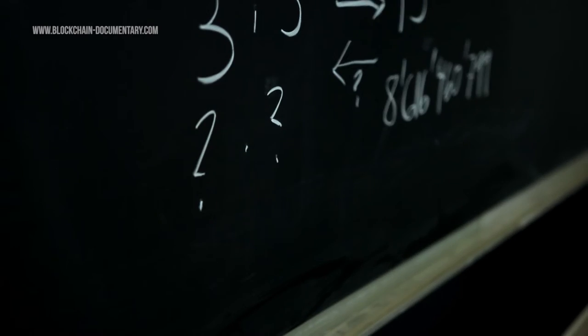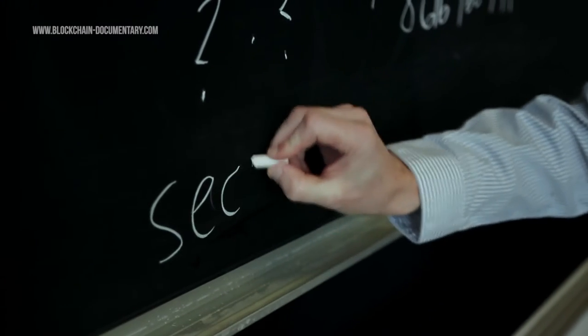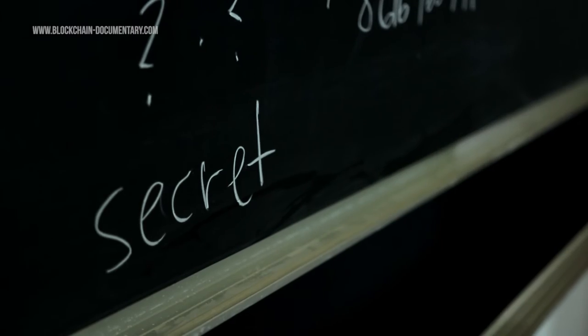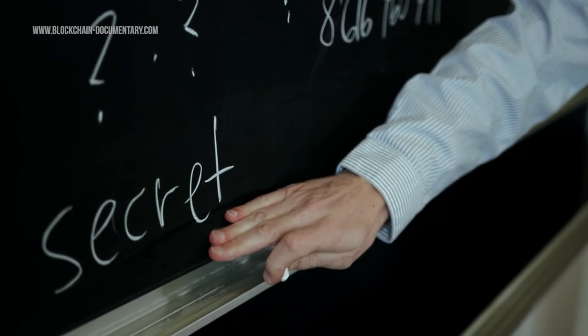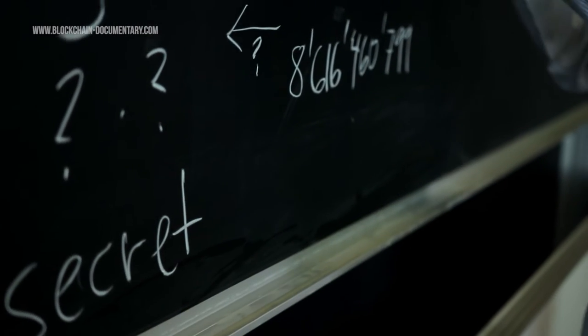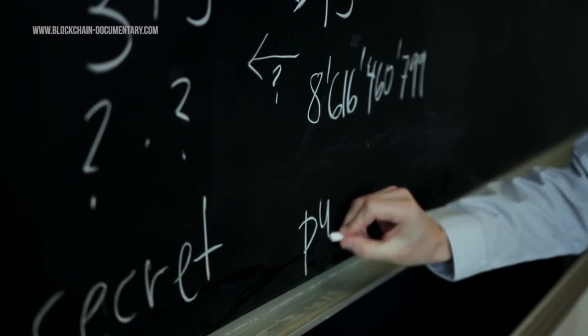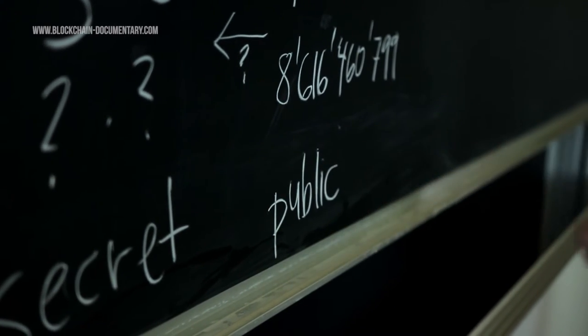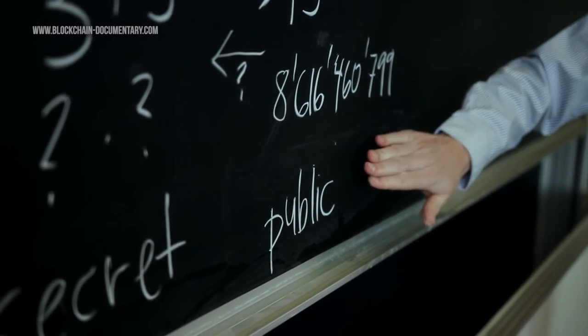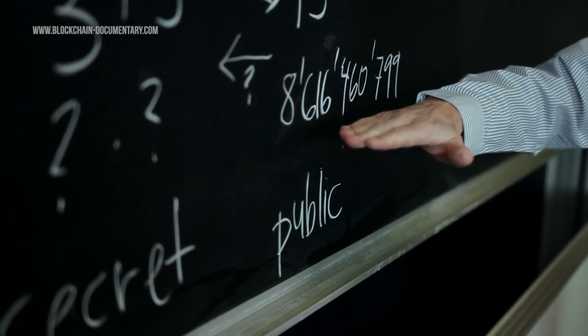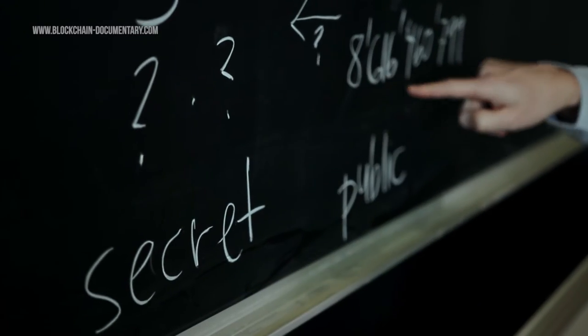So these values, they have names. This side here is actually the secret key. That's what you want to keep for yourself. That's your secret to make sure that you can sign such a transaction that nobody else understands this. And this is the public key. This is something you want to tell everybody. Everybody can know this value here, but nobody should know the factors that made this value.